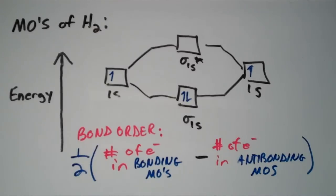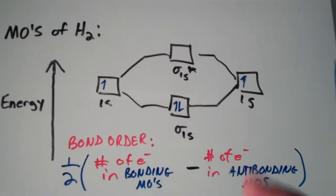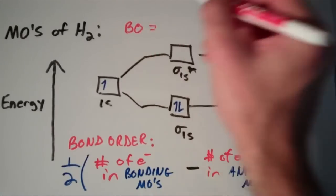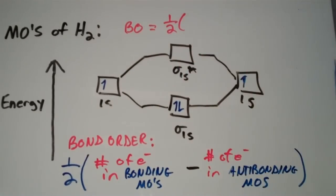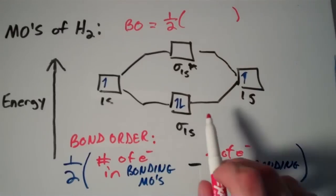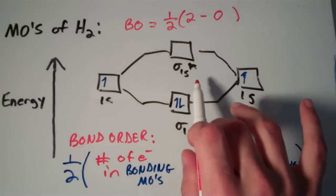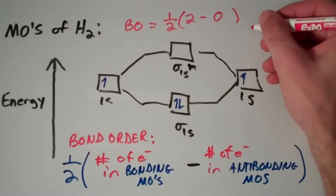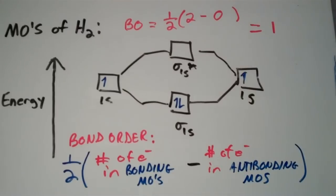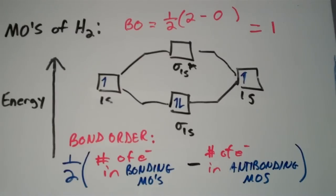In the case of H2, the bond order equals one half times the quantity of 2 — the electrons in the bonding molecular orbitals — minus 0, the number of electrons in the antibonding molecular orbitals. One half of (2 minus 0) equals 1. Generally, a positive bond order means a stable molecule that you'd predict to exist in nature, while a zero or negative bond order means the molecule is not stable and the electrons are better off as individual atoms.